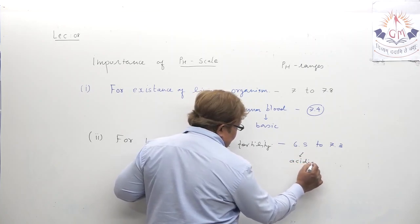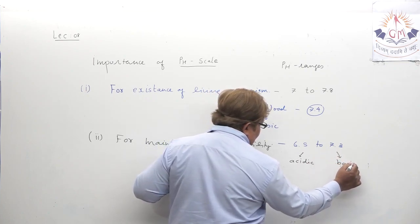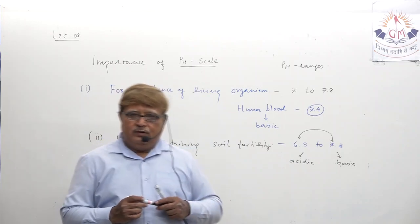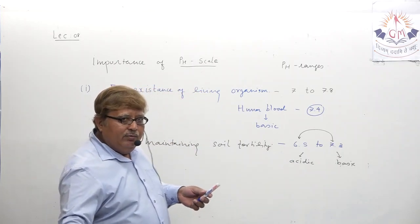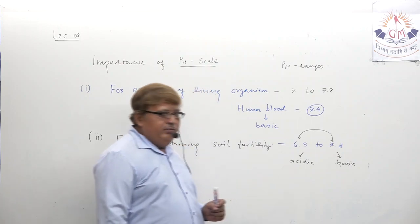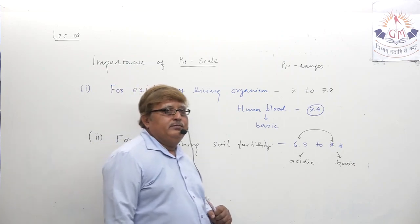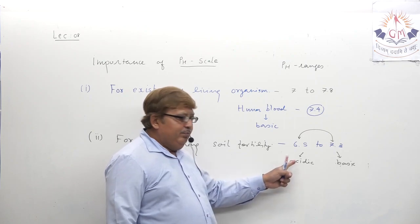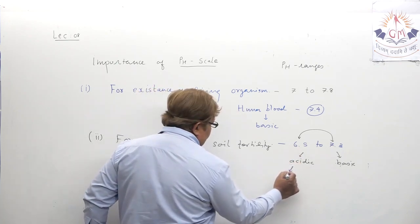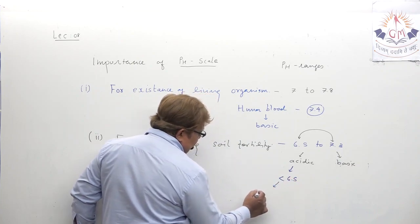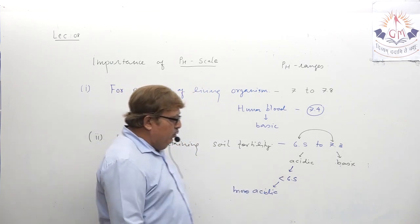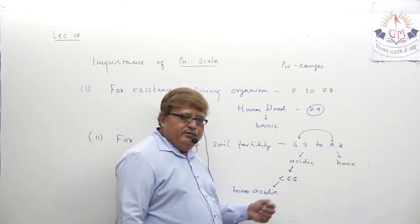Before cultivating any crop, farmers should have the soil tested. Today soil-testing laboratories are available from government and private agencies, where the farmer can get the pH of the soil tested. It has to be in the range of 6.5 to 7.3. If the pH is less than 6.5, that means the soil has become more acidic. To bring the acidity to the level of 6.5, the farmer must add or mix calcium oxide (CaO) — lime powder — with the soil.